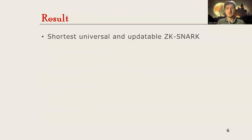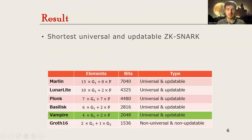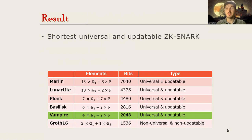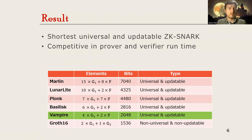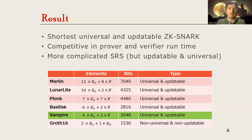So let's get to our result. We construct the shortest universal and updatable zkSNARK. As we see from this table, the only zkSNARK known so far with a shorter group element proof is the Groth'16 zkSNARK, but that is non-updatable and non-universal, so it is much less convenient to use in practice. Additionally, we achieve prover and verifier runtimes competitive with other updatable and universal zkSNARKs, though we have a more complex structured reference string — which is still, luckily, updatable and universal.